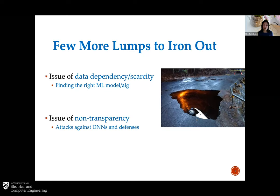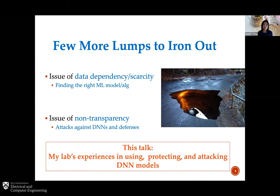The other challenge is that when you train machine learning models, especially deep learning models, you train a black box. There's a kind of model non-transparency that is very different from a parametric model where you know the model design, structure, and what it's looking for. In a lot of DNN models, you don't really know what is going on. This opens up vulnerability to attacks that try to trick the DNN models into making the wrong classification results. So how do we attack those and how do we defend our model against these powerful attacks?